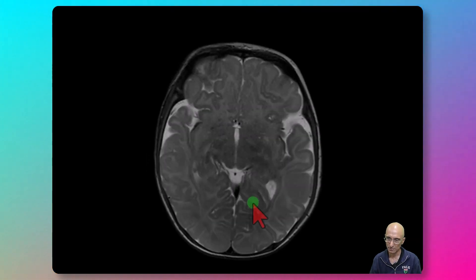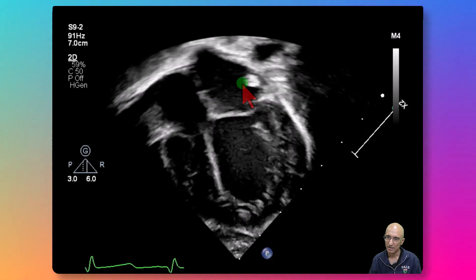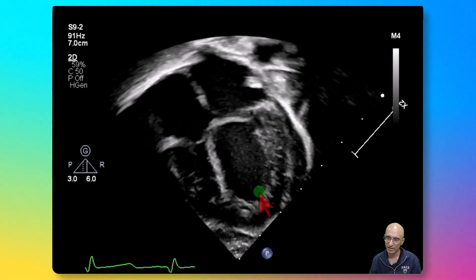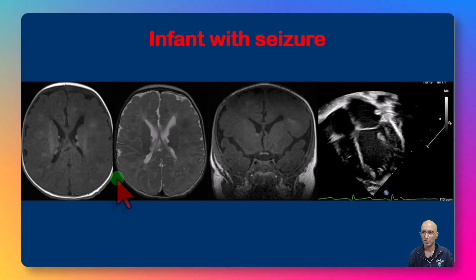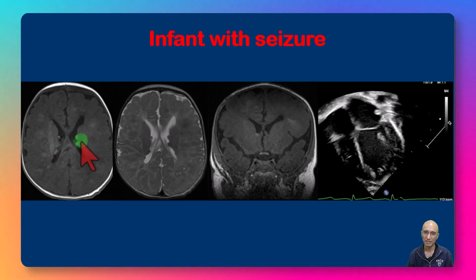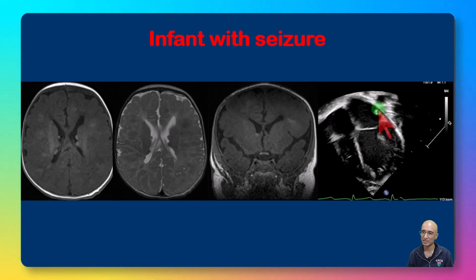As part of the workup, the patient also underwent an echocardiogram examination. On the echocardiogram, we can see a hyperechoic lesion along the lateral wall of the left atrium, and an additional hyperechoic lesion in the left ventricle apical region. So we are dealing with an infant who has multiple sub-ependymal T1 hyperintense and T2 hypointense lesions, additional lesions in the white matter, radial bands extending from the sub-ependymal region to the sub-cortical regions, and hyperechoic lesions in the left atrium and left ventricle.